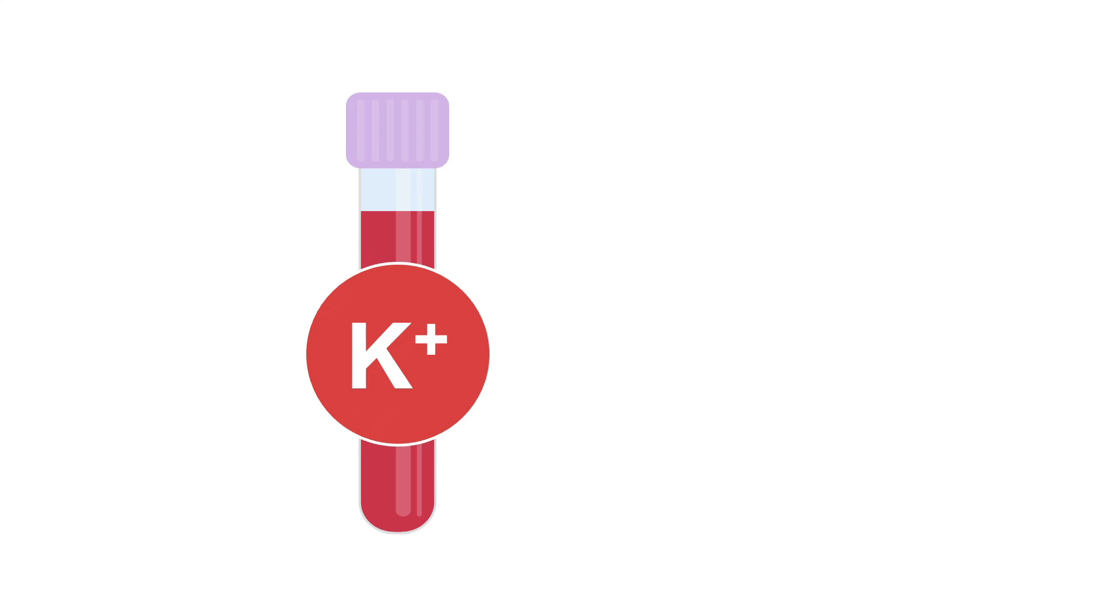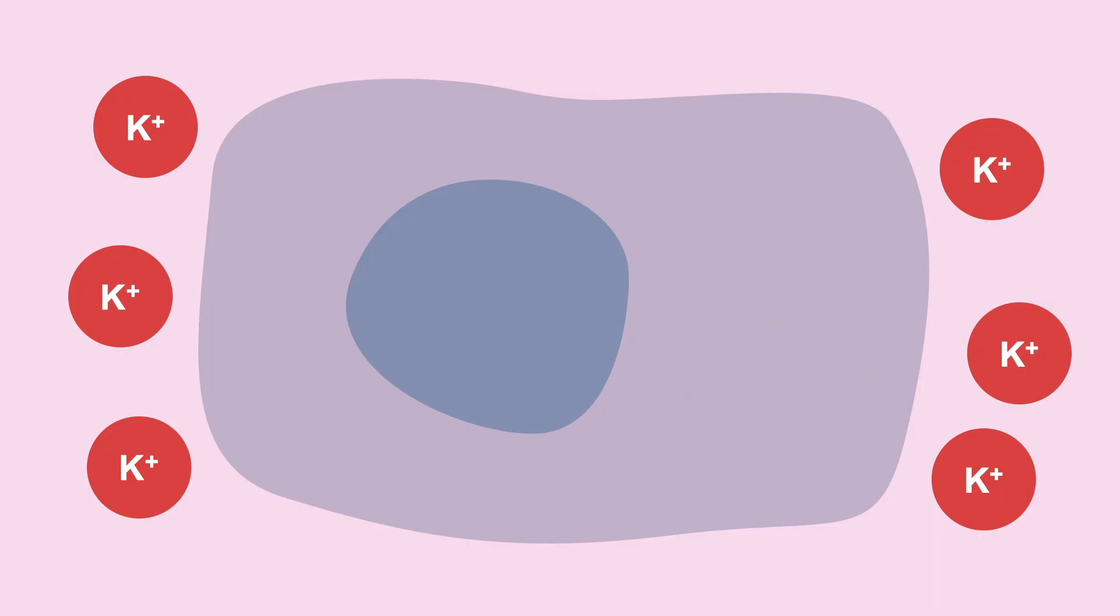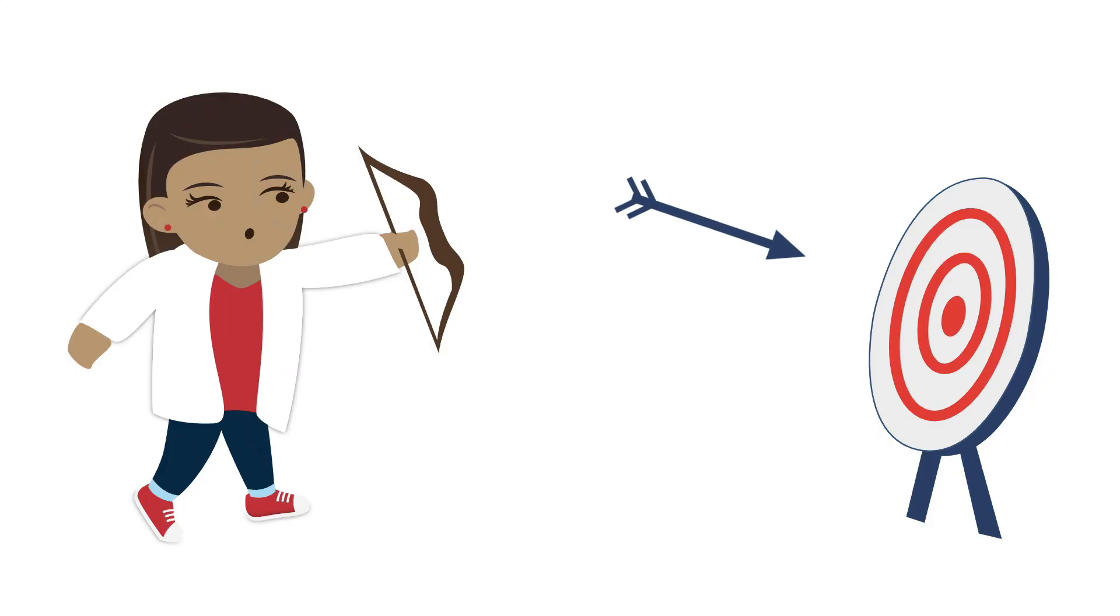There are also limitations in interpreting a serum potassium level. Pseudohypokalemia can occur when there is an excess of white blood cells in the sample. There are things that lead to cellular shifts of potassium, such as medications and acid-based disorders. If you suspect another disorder affecting serum potassium levels, make sure to target the underlying cause first.